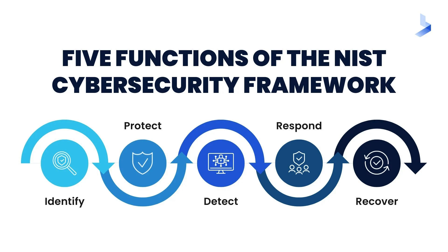Cyber security operates through five core functions: identification, protection, detection, response, and recovery. Identification involves recognizing and understanding the risks, assets, and threats that an organization might face. Protection focuses on implementing measures like firewalls, encryption, and access control to safeguard data and systems. Detection is about continuously monitoring networks to spot any unusual activity that could indicate a breach. When a threat is detected, the response function kicks in, taking immediate steps to mitigate the impact of the attack.